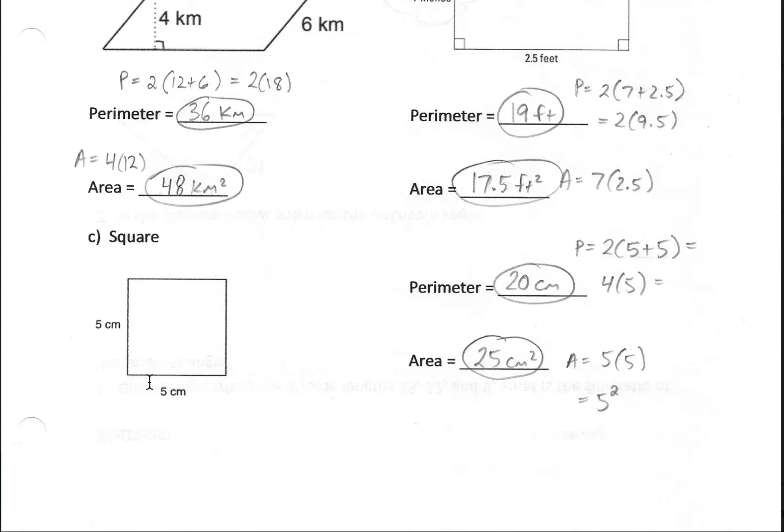Find the area, since we're given the side lengths, you could just square five, five times five, or think about base times height, which is the exact same thing. Five squared, or five times five, is 25, and we got square centimeters as our units here.